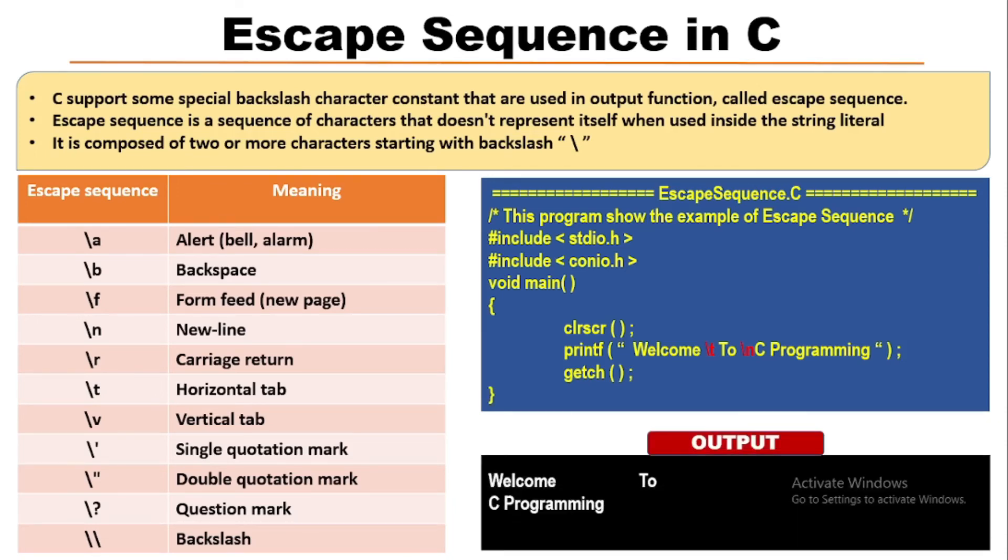In the output, we can see that after 'Welcome' and before 'To', a horizontal tab is used. And the text 'C Programming' is written on the next line because we used backslash n, i.e., the newline escape sequence. So this is all about escape sequences in C programming.